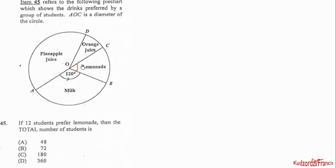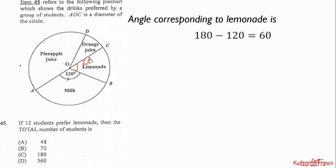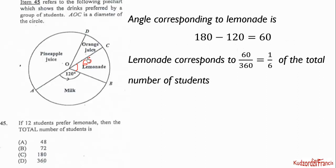Item 45 refers to a pie chart showing drinks preferred by students. Line AOC is the diameter of the circle. Since a diameter forms a straight line, the two angles on either side must add up to 180 degrees, making the unknown angle 60 degrees. The angle corresponding to lemonade is therefore 60 degrees, which represents 60/360 = 1/6 of the total.